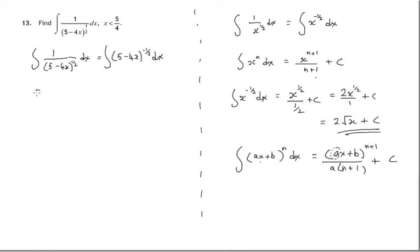So we can go ahead and integrate. We take that expression, raise the power by 1 to give us a half, divide by the new power, remember to add c, and then look at the coefficient of x. It's negative 4. It must appear on the bottom of that fraction. You have to divide by that, otherwise things would not be working.